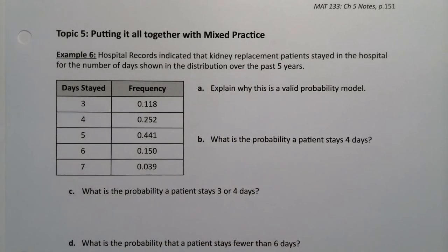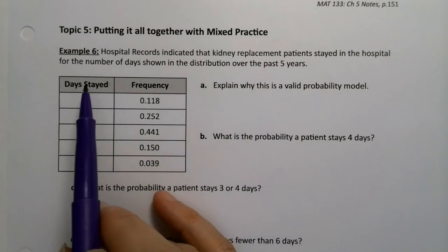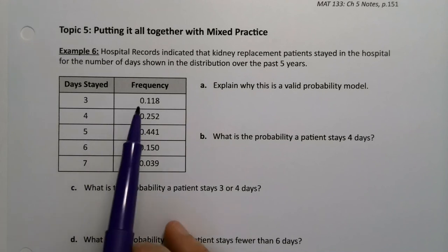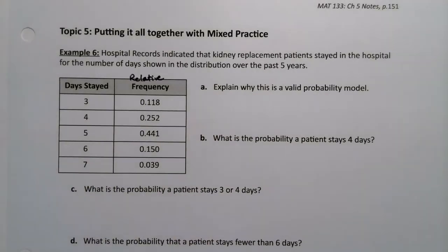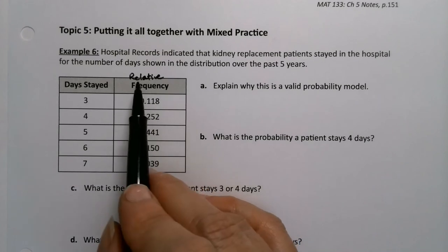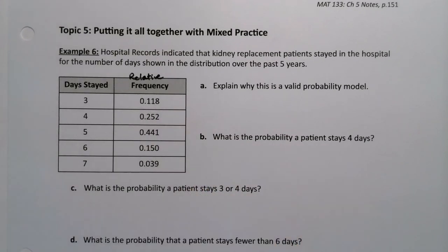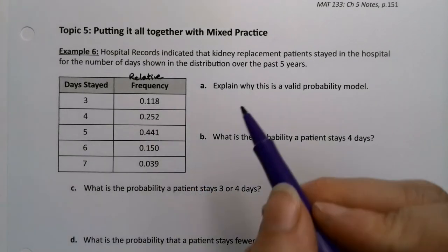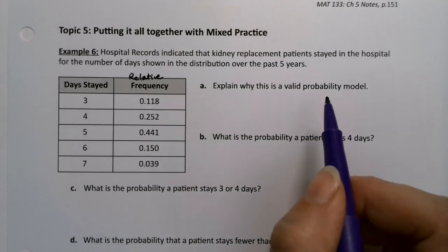I did get this from a real statistics for nursing data book. Here we have the days stayed and the frequency, the relative frequency at that. So I'll add on a little note that it's the relative frequency. The first question is from section 5.1, which is why is this a valid probability model?